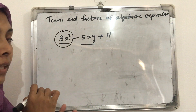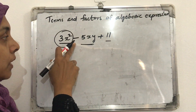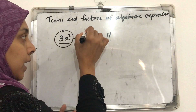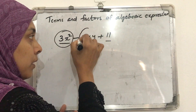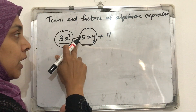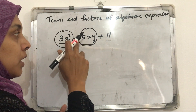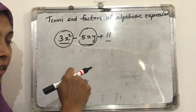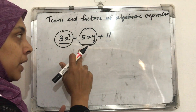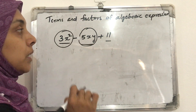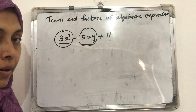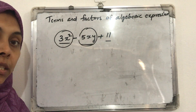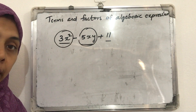The first term is 3x². After 3x² there is a subtraction sign. The second term is minus 5xy. And the third term is 11, which is a constant part. A constant part is also considered a term.